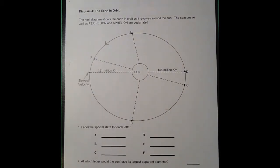Alright, we're on to Diagram 4. Now, Diagram 4 is giving you a different perspective of the seasons. Frequently, when you look at this diagram, it's actually a little bit over-exaggerated.